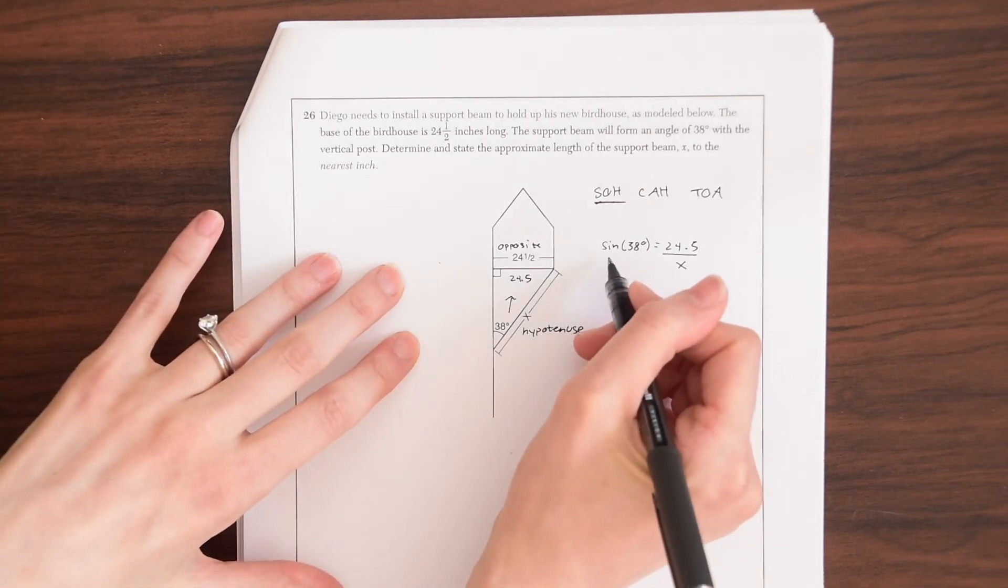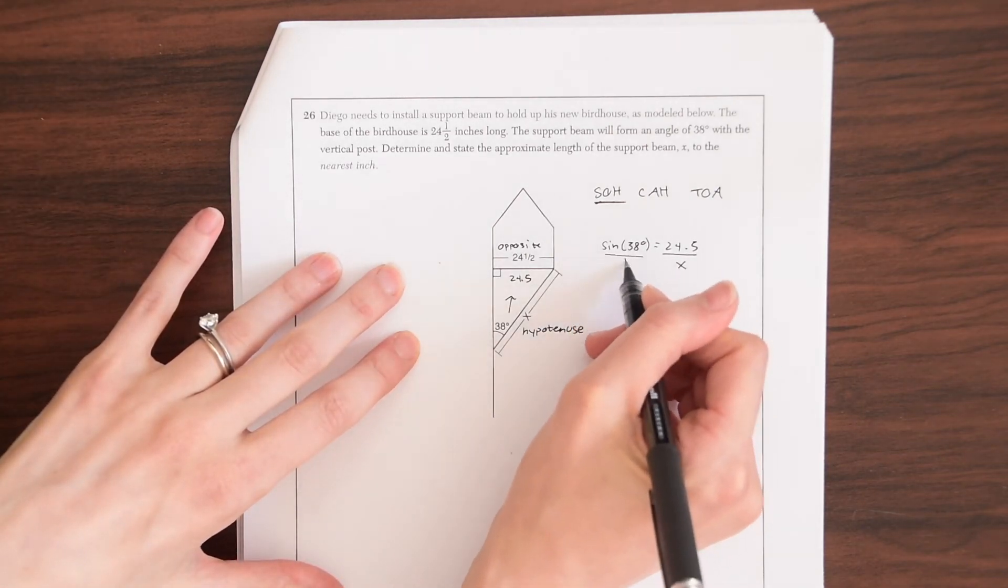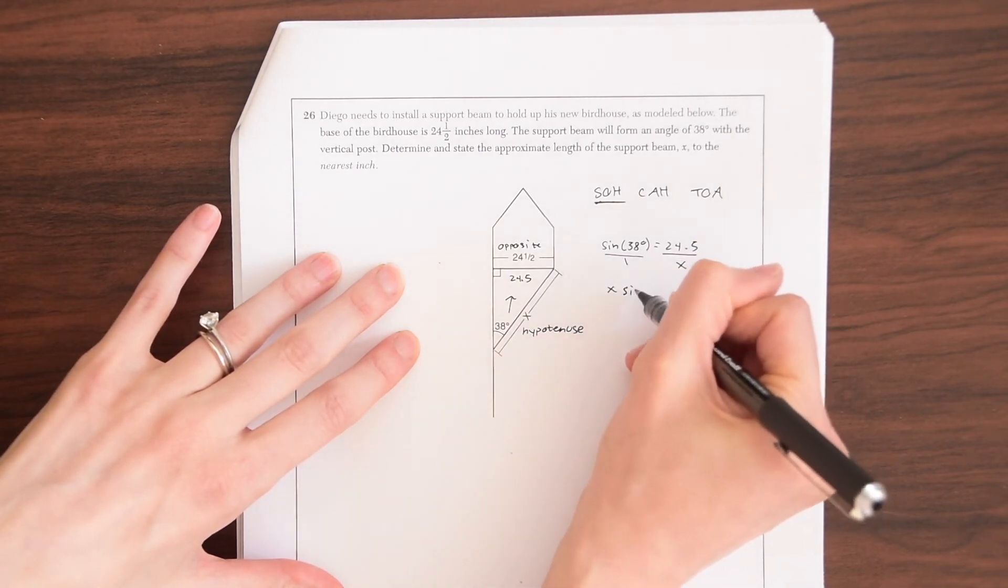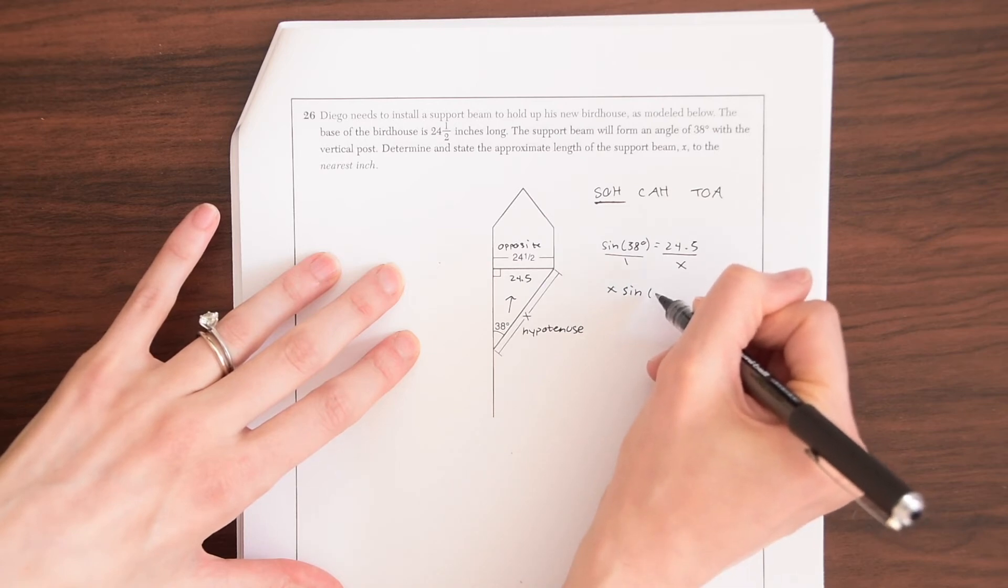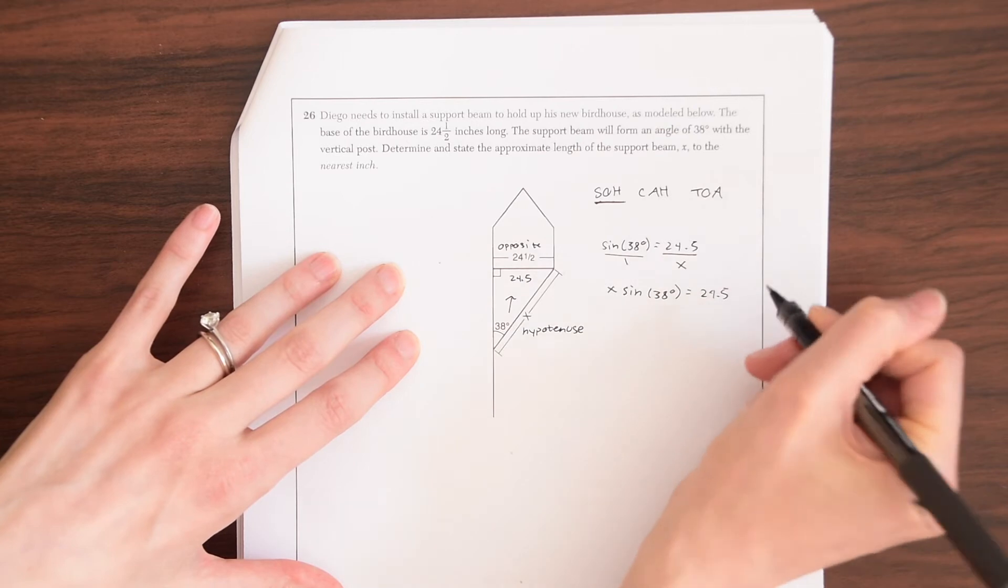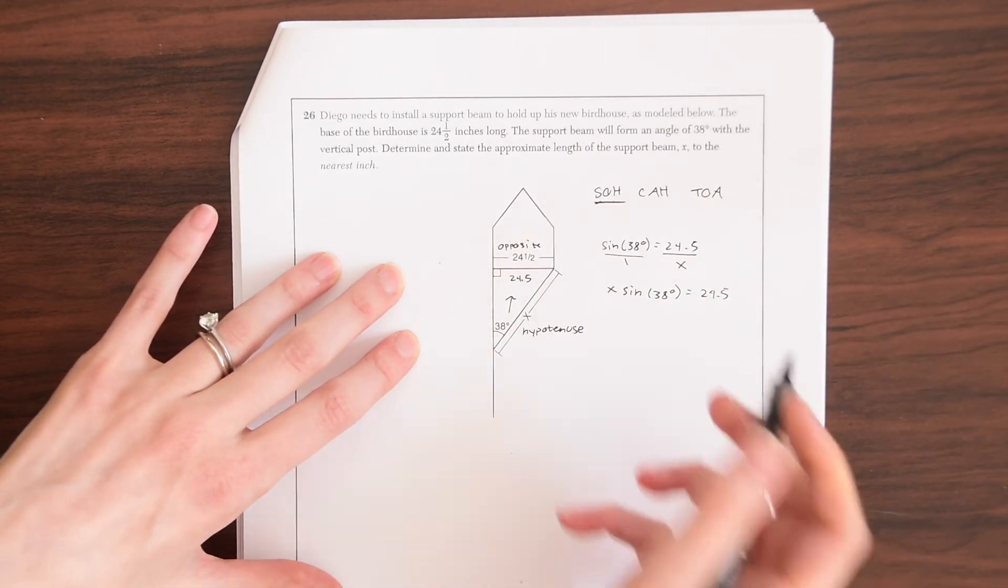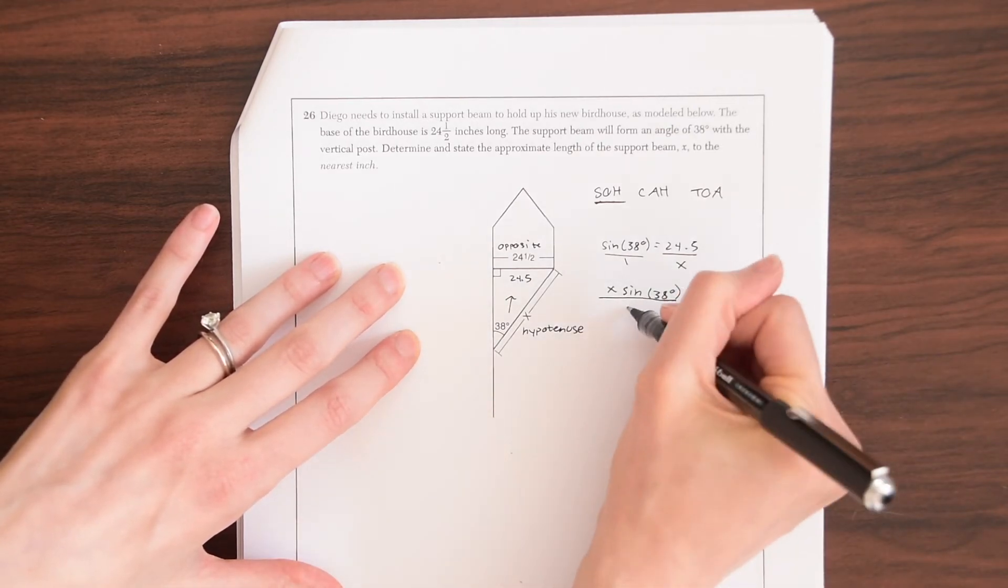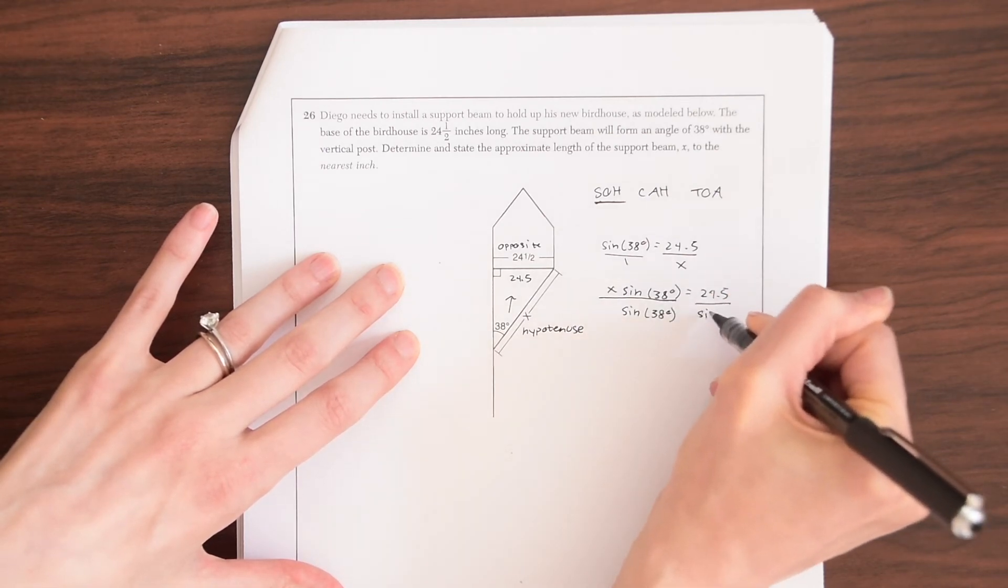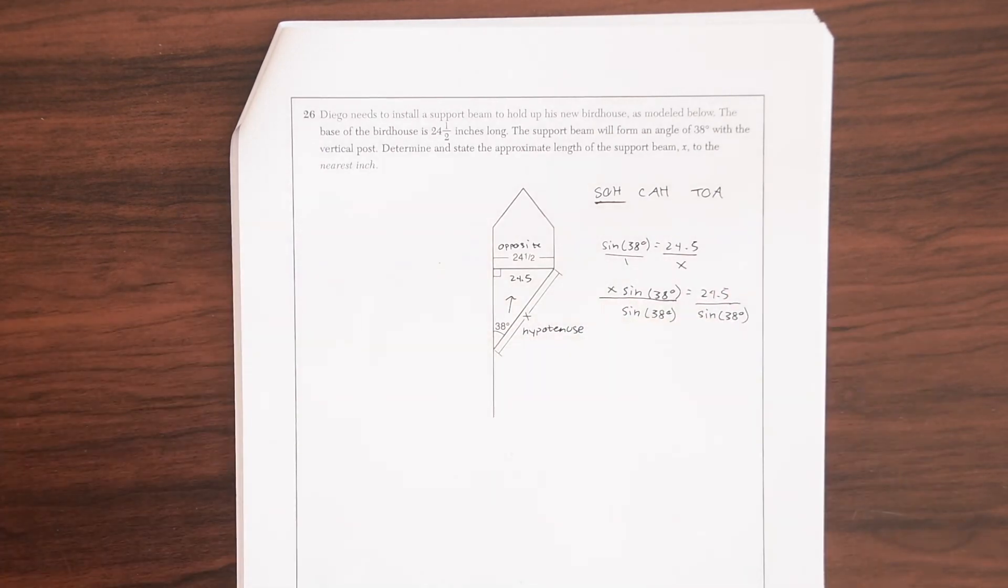So we can cross multiply. You can think of this as cross multiplying or you just see that you have to bring this x over to the other side by multiplying. So we get x times sine of 38 degrees is equal to 24.5. And now we want to find the value of x. We're going to just divide out this sine of 38 degrees from both sides.